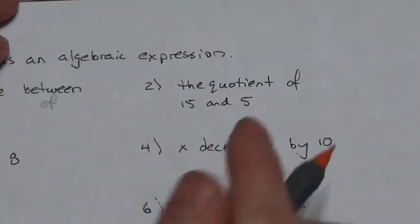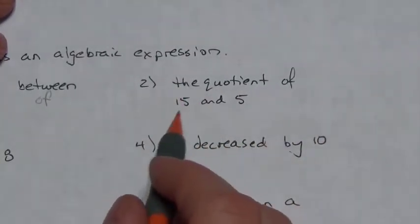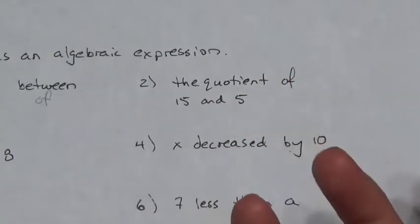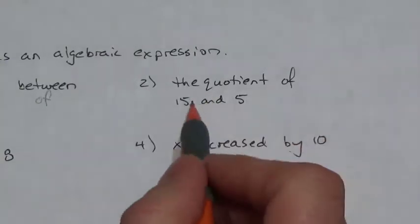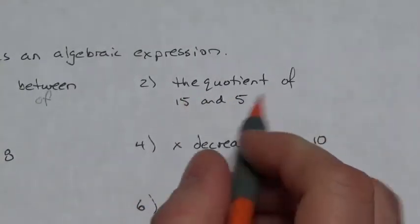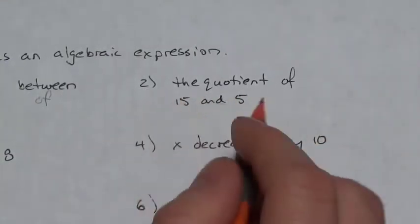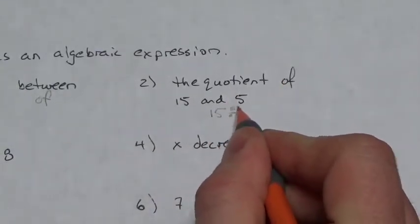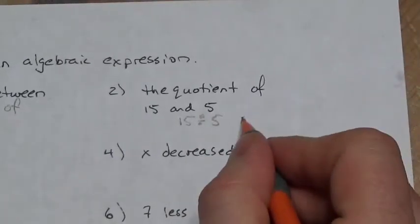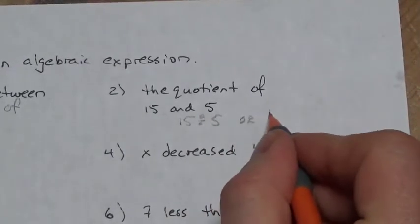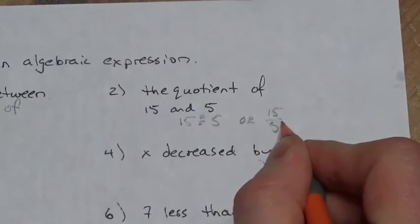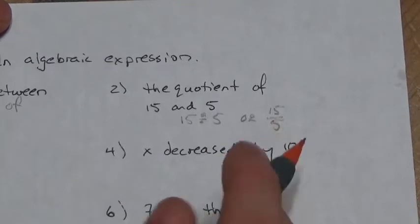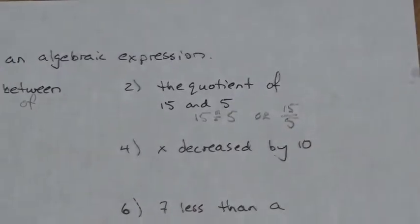Now the quotient of fifteen and five. The word 'quotient' is requesting the result when we perform a division. So fifteen and five — the quotient of fifteen and five means fifteen divided by five. You might also write it vertically as fifteen divided by five. They both mean the same thing; sometimes it's easier to work with it horizontally than vertically.